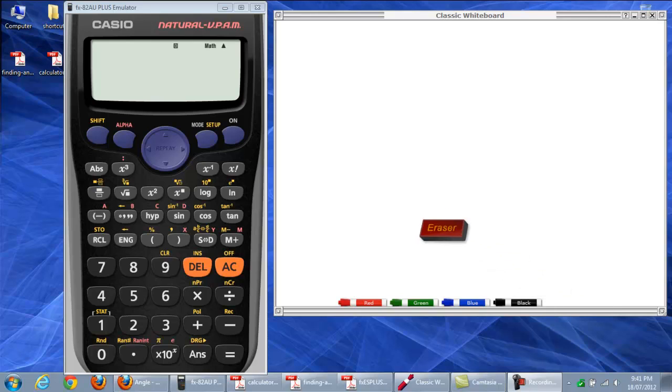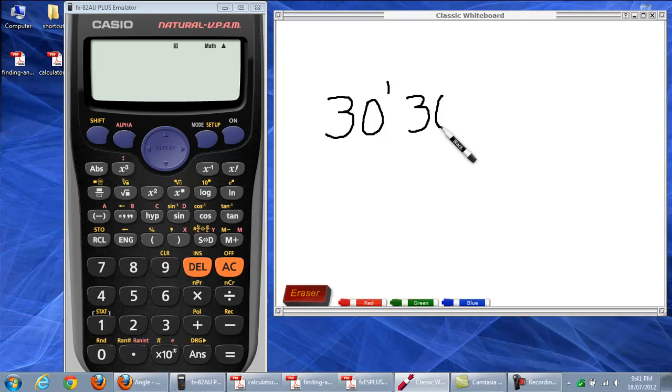Welcome to the second video. We'd like now to have a look at what do we do when we have questions like sin 30 degrees and 30 minutes. That should be degrees there and that's minutes. How do we use the calculator? And how can we do it manually?